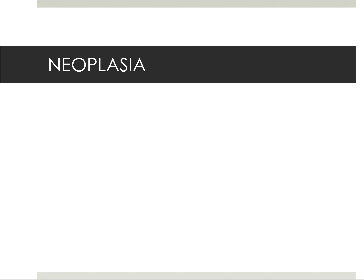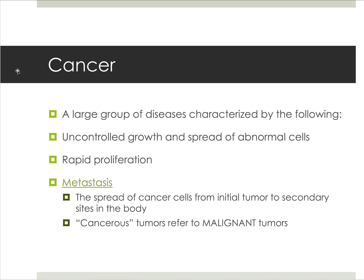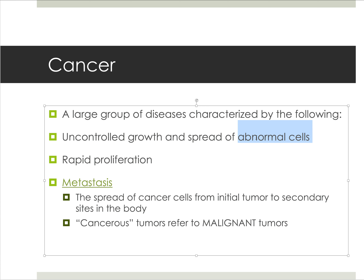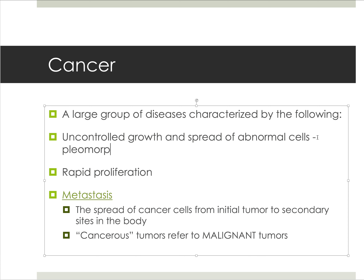Let's get into the basics of neoplasia, which in typical conversation is referred to as cancer. If you've looked at an astrology report, cancer is the sign associated with a crab. When tumors were put under a high-powered microscope, they were noted to have invasive crab claw-like extensions, which is why the term 'cancer' was adopted. Cancers are a large group of diseases characterized by uncontrolled growth and spread of abnormal cells — what we call pleomorphic cells.